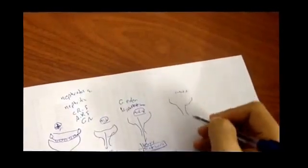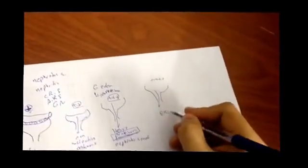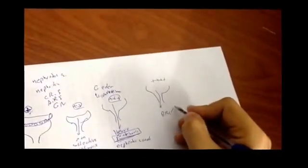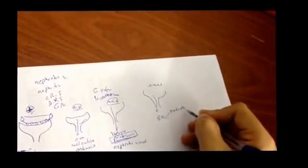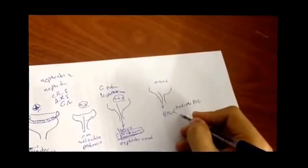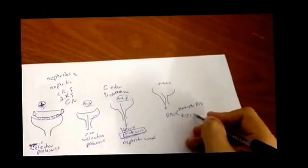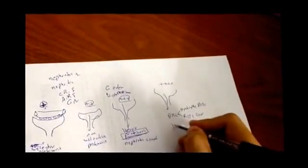In the fourth stage, in addition to heavy proteinuria, there will be RBCs in two forms: dystrophic RBCs or RBC casts, resulting in hematuria.